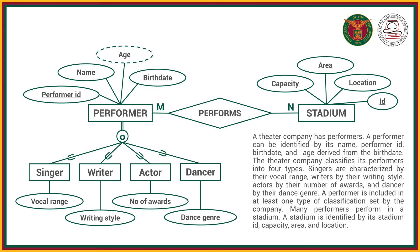For our completeness constraints, this is a total specialization, meaning all performers should be classified in at least one classification. Many performers perform in a stadium. A stadium is identified by its stadium ID — our primary key — capacity, area, and location. So that is a many-to-many relationship.